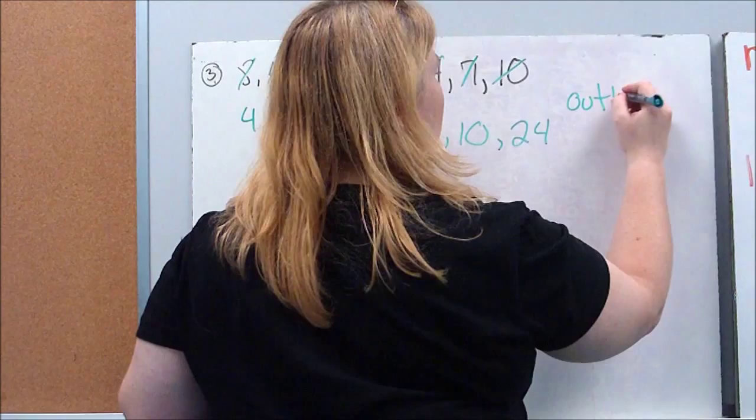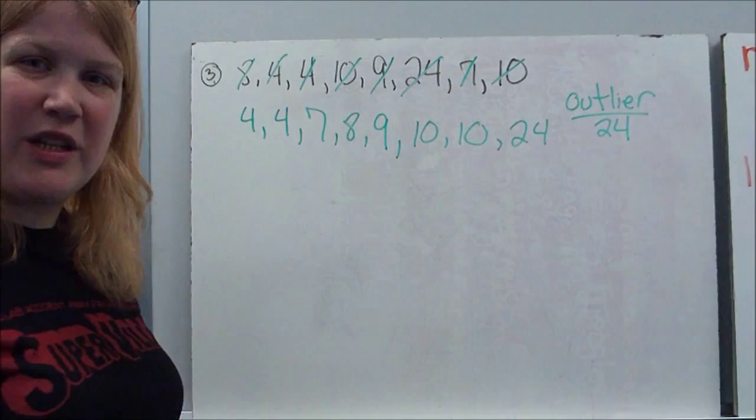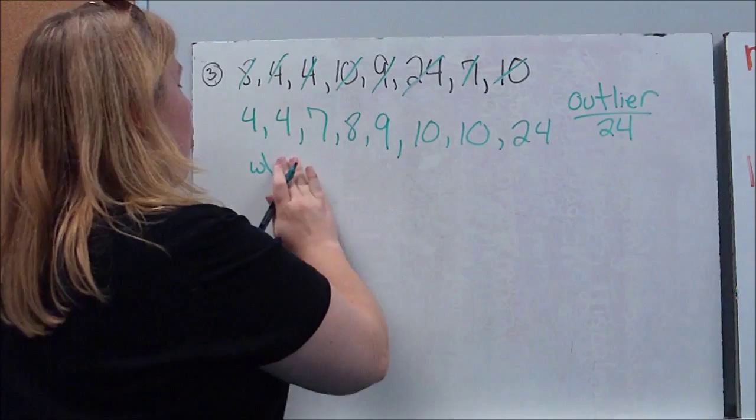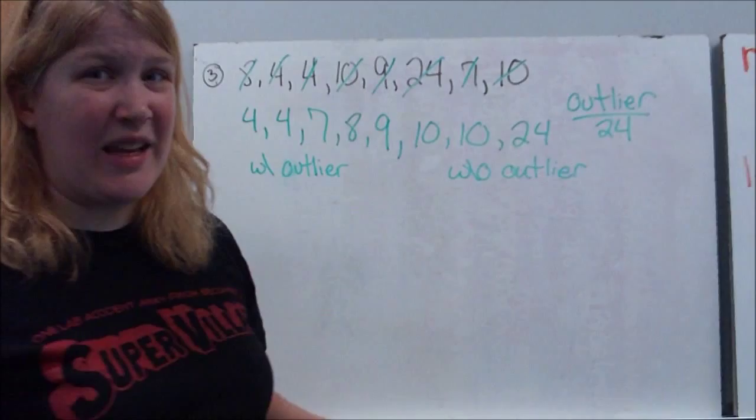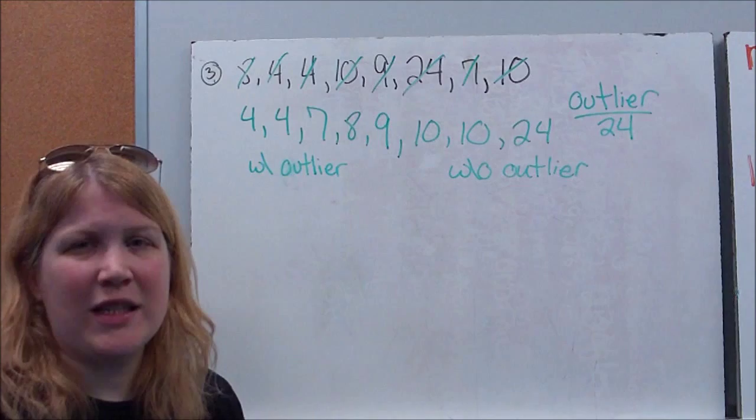So what we're going to do is we're going to do two different calculations. We're going to calculate our central tendencies with the outlier, if I could spell, and without the outlier so that you can see what difference that makes to our data. It's going to make a big difference when we talk about our mean. The other ones, not so much, but our average is going to be very different this way.